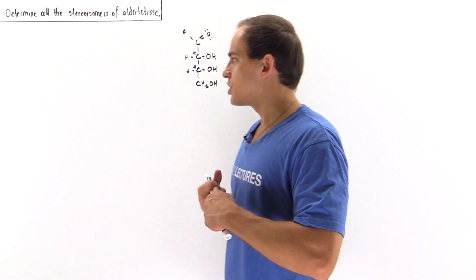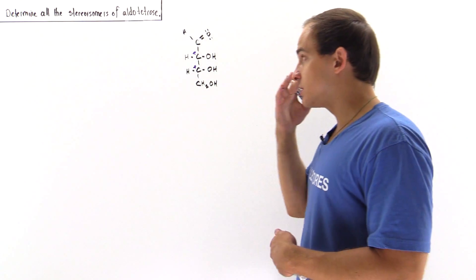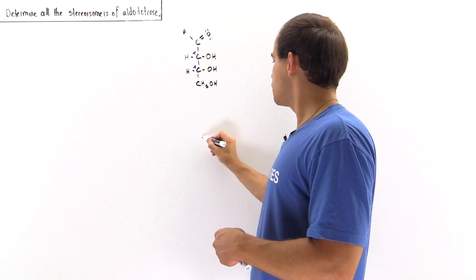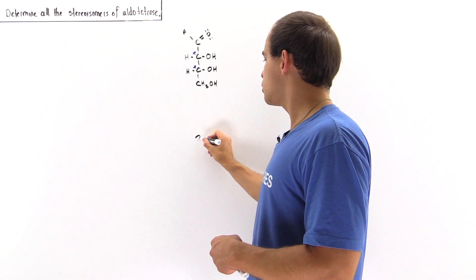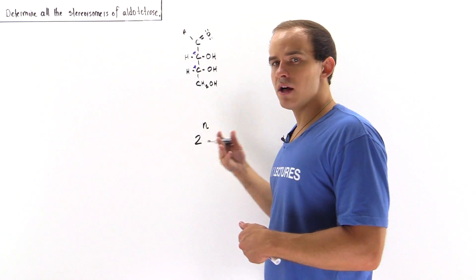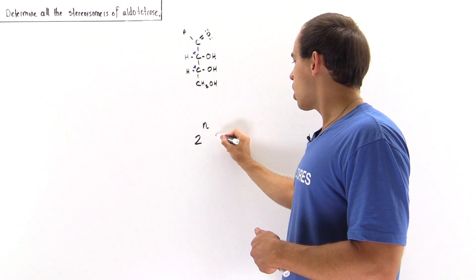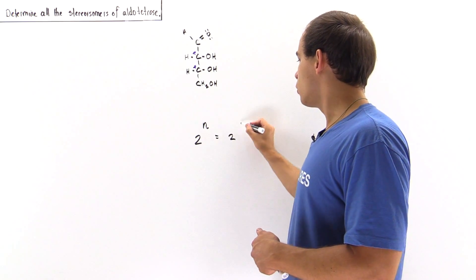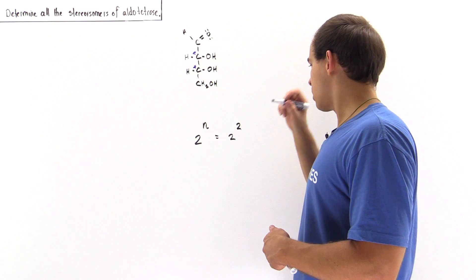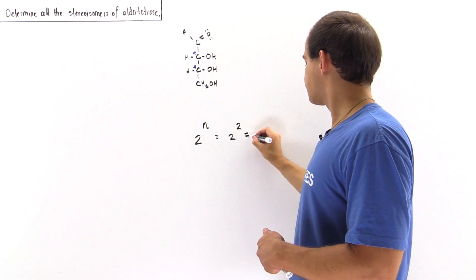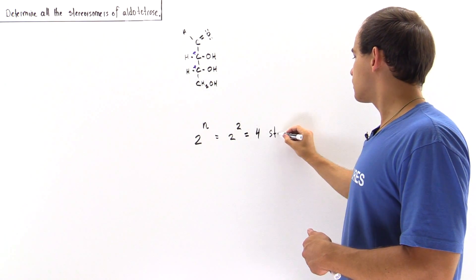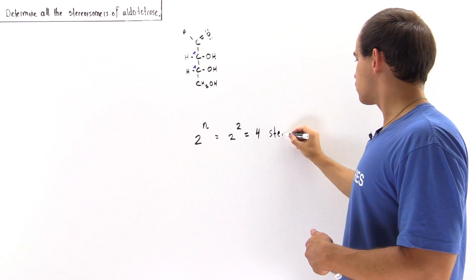We can use that information to calculate the total number of stereoisomers using the equation two to the power of N, where N is the number of stereogenic carbons. So that's two to the power of two, giving us a total of four stereoisomers of aldotetrose.